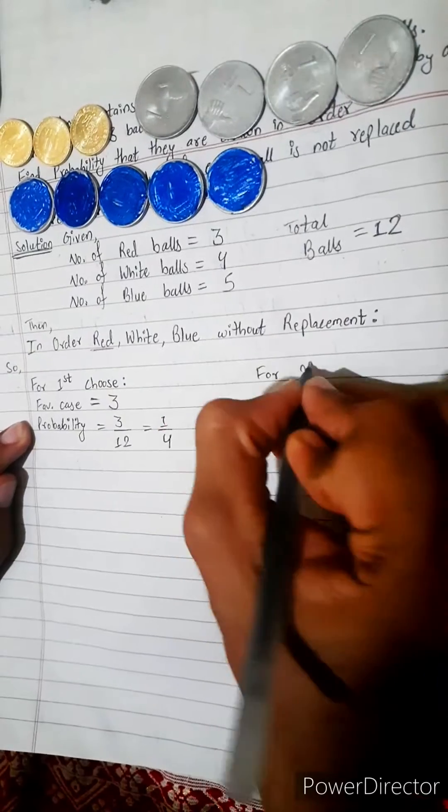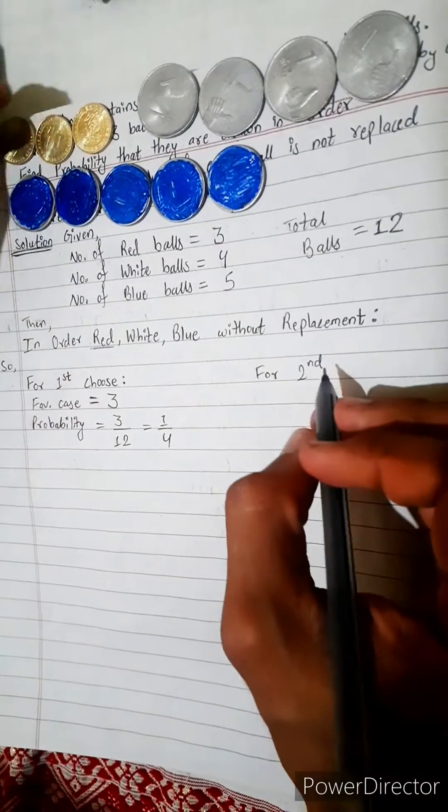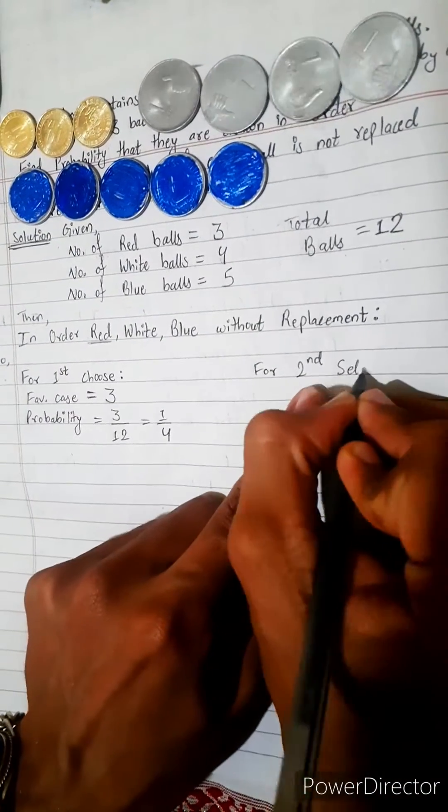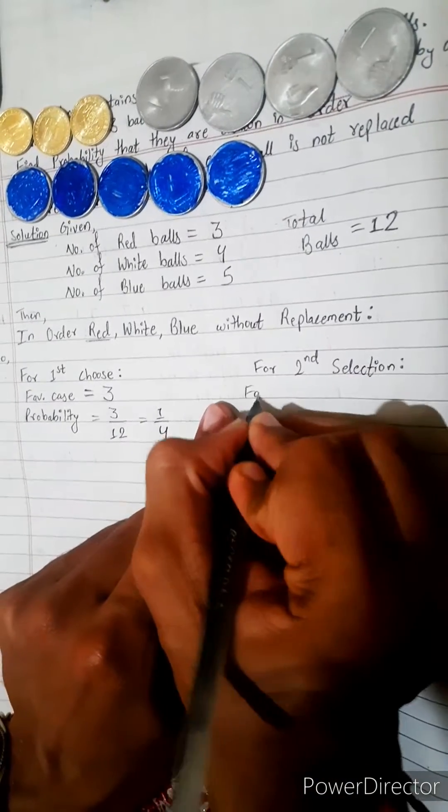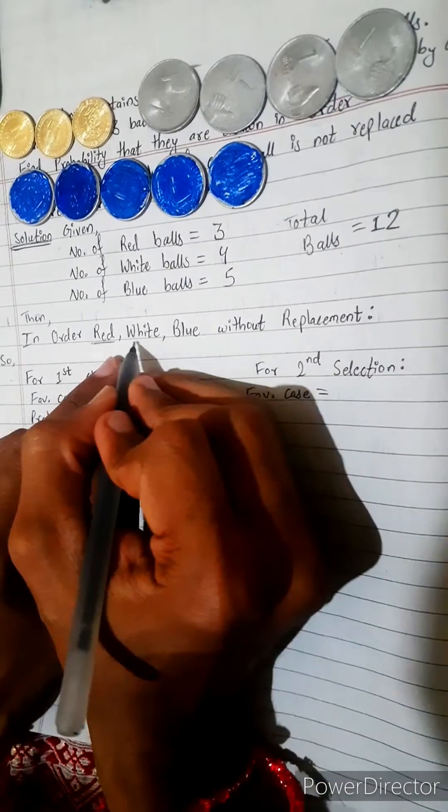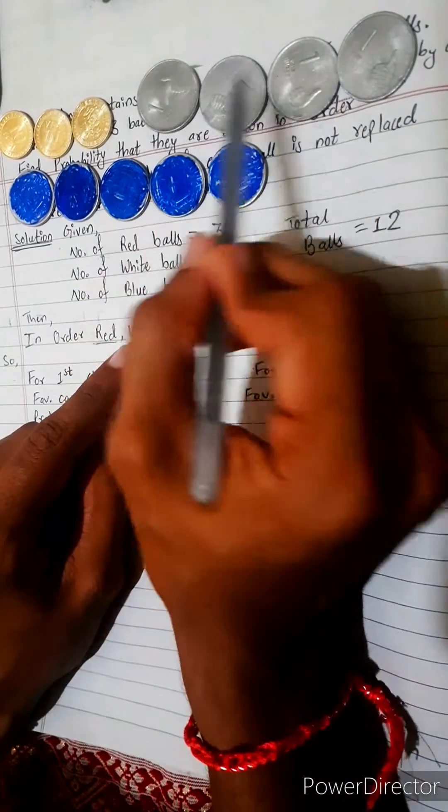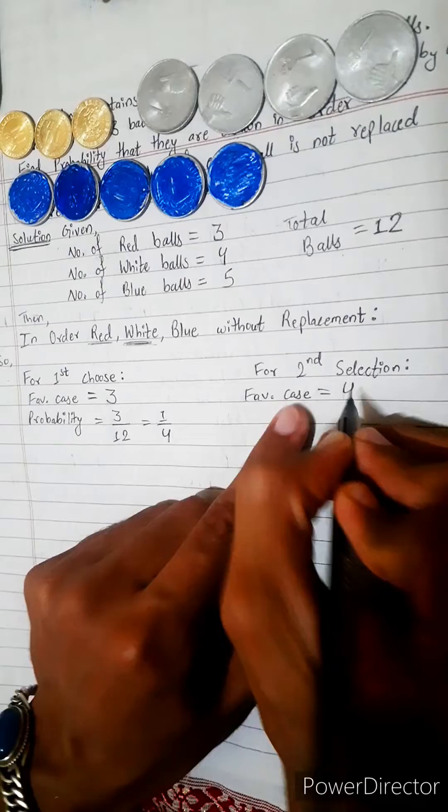For second choose or second draw, second selection. For second time, our favorable case: what is our favorable case? We need white in second time. 1, 2, 3, 4. There are 4 white.